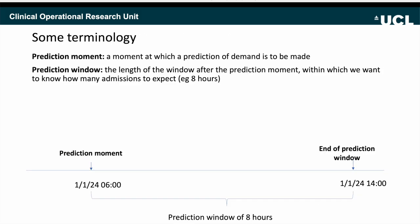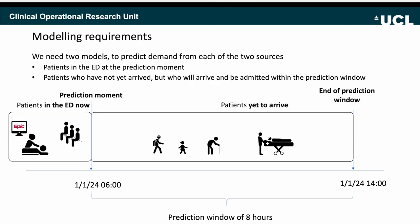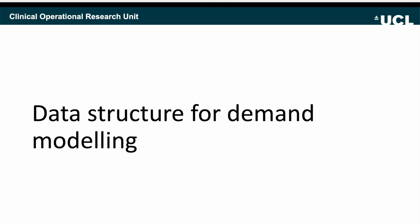I'll give you some terminology to help us along. I'll talk about prediction moments — the moment in the day when a prediction is to be made, those five times in the day I showed before — and then about arrivals and predictions within the prediction window after the prediction moment, which in our case is eight hours. As I've already said, we're going to need two models: one thinking about those patients who we have electronic health record data about, and one about those who have not yet arrived but will be admitted.